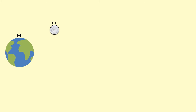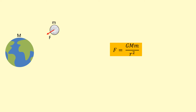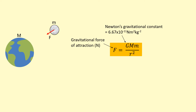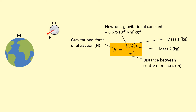Here I have the Earth with a mass of capital M and the Moon with a mass of lowercase m, and I want to calculate the gravitational force on the Moon from the Earth. I can use Newton's law of gravitation, written as F = GMm/r², where capital G is Newton's gravitational constant, 6.67 × 10⁻¹¹, which you can find in your data sheets. Capital M is the Earth, lowercase m is the Moon, and r is the distance from the center of one to the center of the other in meters.